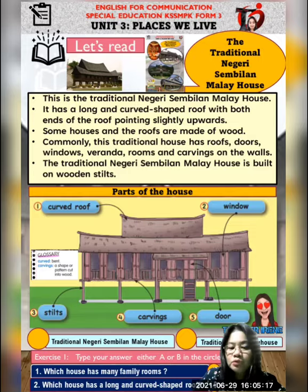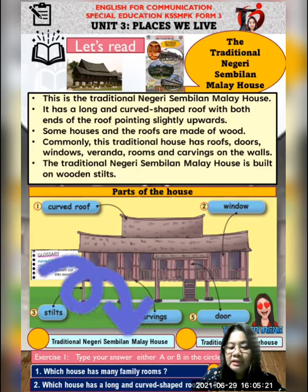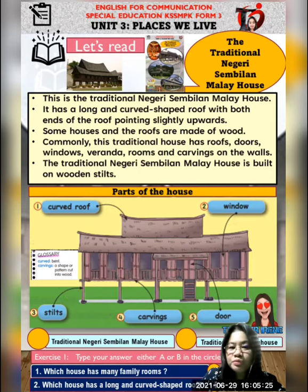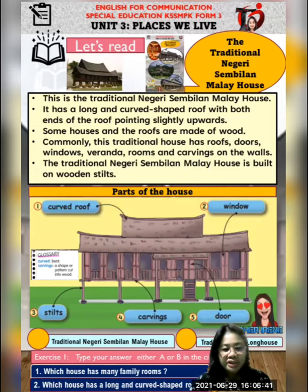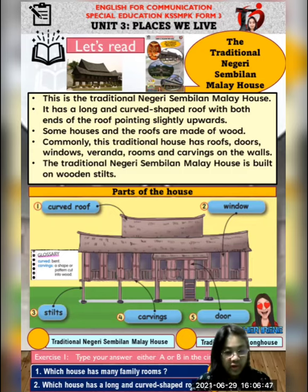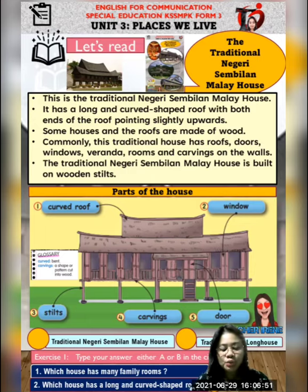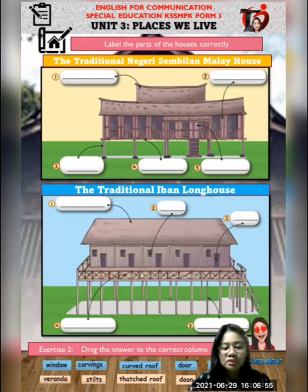Untuk latihan, kamu dikehendaki untuk menjawab exercise one. Which house has many family rooms? Kamu dah baca petikan tadi, kamu jawab soalan satu. Dan soalan kedua dikatakan, which house has a long and curved-shaped roof? Jadi kamu jawab soalan satu dan soalan yang kedua. Ini untuk exercise one.